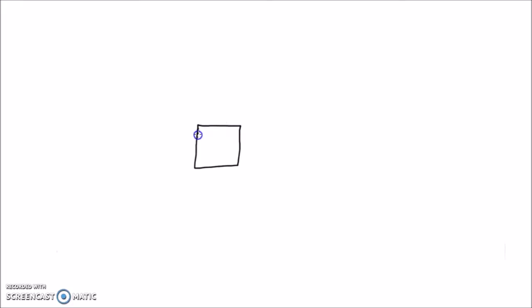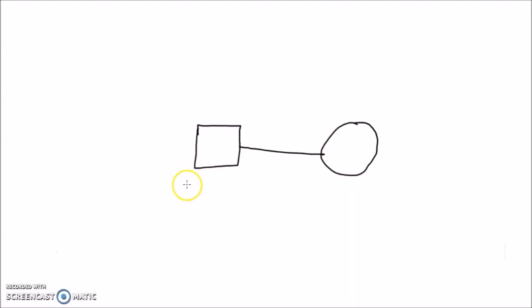To draw a family tree, let's start with the example of Bob. Bob is a male, so we draw him as a square. Bob is married to his wife, who is female, so we mark her as a circle. Bob comes in wanting to track a condition that runs in his family. In this case, Bob is a proband or consultant, and we mark that with an arrow. Bob has two parents.